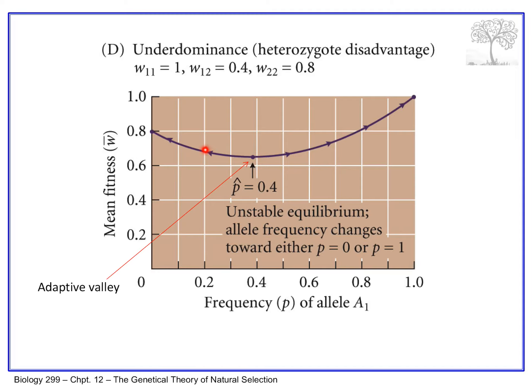For a population to shift from one adaptive peak to another — to cross that adaptive valley — drift would have to interact with selection. Drift could shift allele frequencies during population bottlenecks, for example, such that once the population begins to grow again, selection is able to take it back up the other slope.